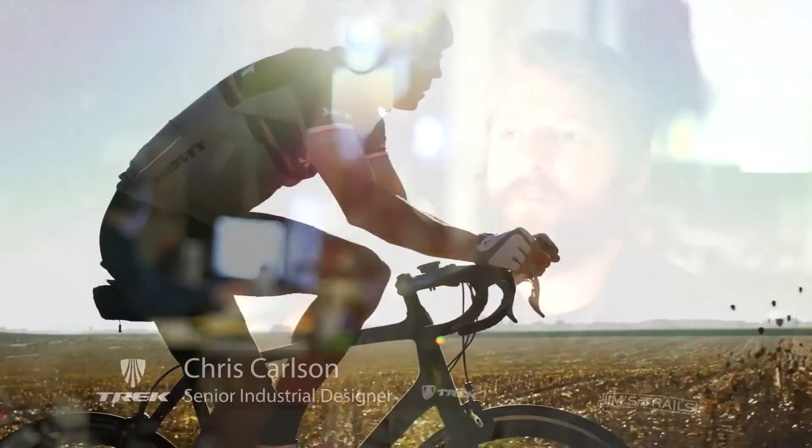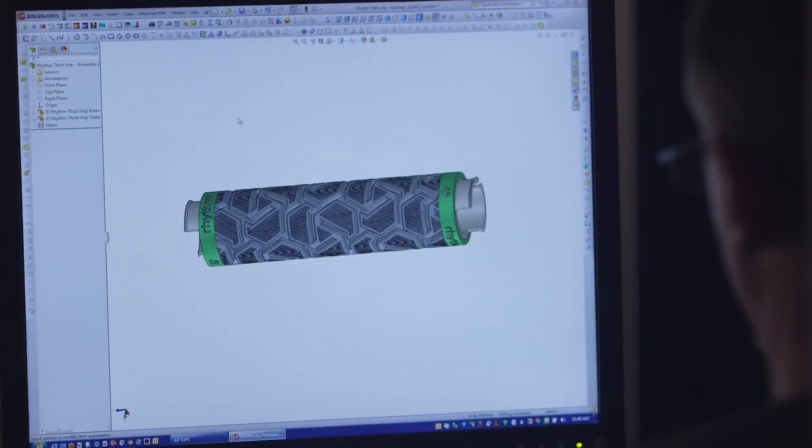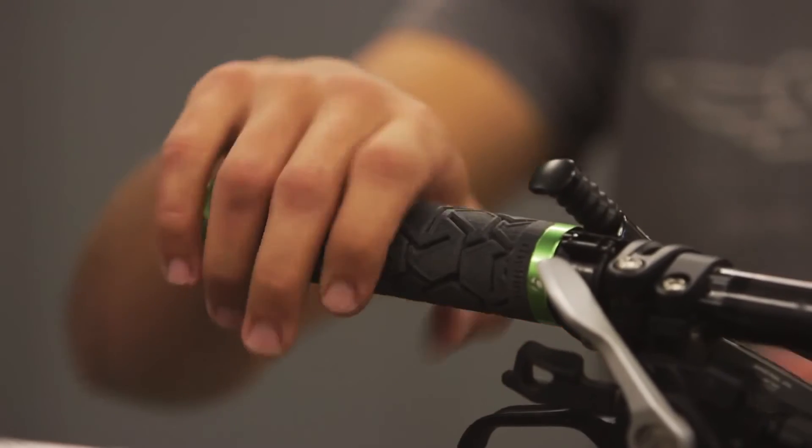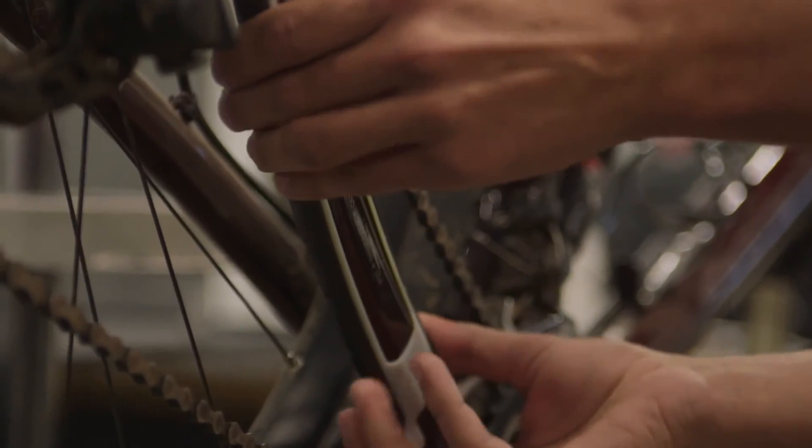With the Connex 3, we can better duplicate the material properties of some of the things we're making. It's important for our prototype parts to look and feel like production parts. In order to make the best bikes here at Trek, we need the best tools, and the Connex 3 is the best tool for the job.